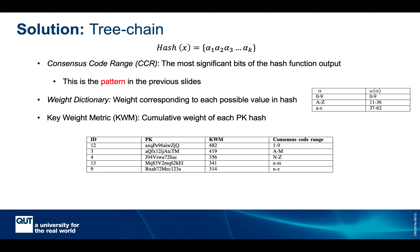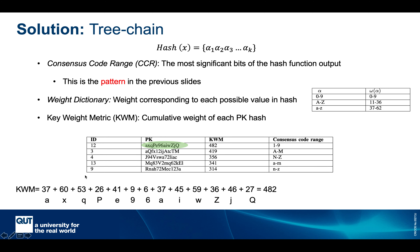We define a weight dictionary that assigns a unique weight to each possible value in the hash function output, which can be numbers or alphabets. We also define a Key Weight Metric (KWM), which is the cumulative weight of each public key hash. For example, node ID-12's public key hash has its KWM calculated by summing the weights corresponding to each character in the public key hash — for instance, the weight for 'a' is 37, added with the rest of the weights.